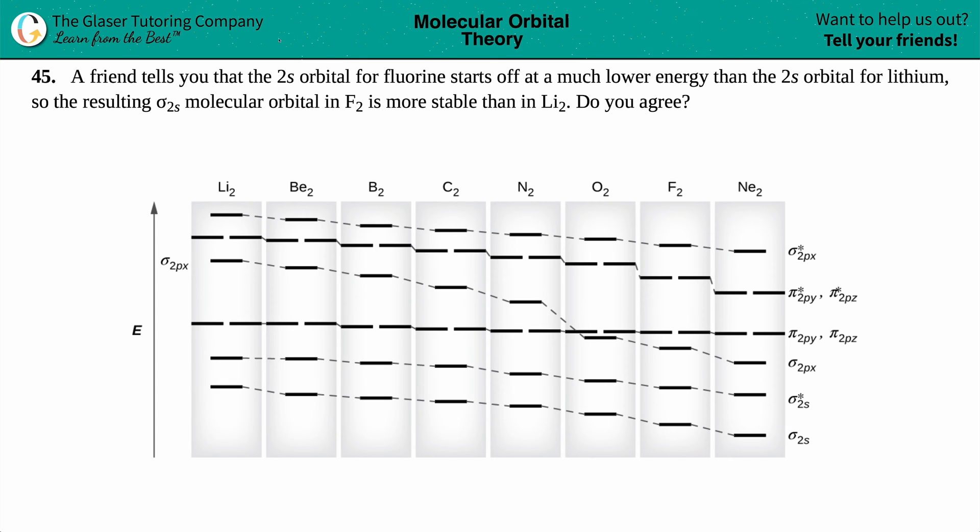Number 45, a friend tells you that the 2s orbital for fluorine starts off at a much lower energy than the 2s orbital for lithium, so the resulting sigma 2s molecular orbital in F2 is more stable than in Li2. Do you agree?